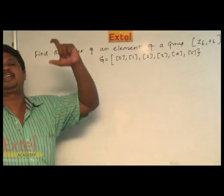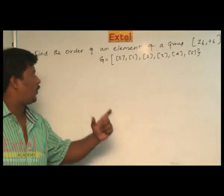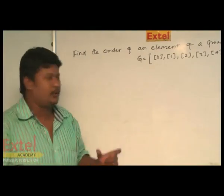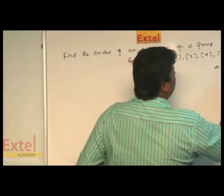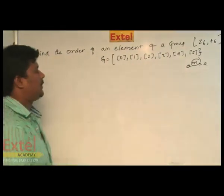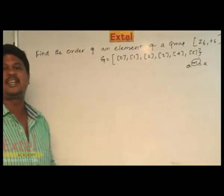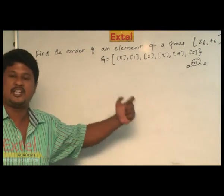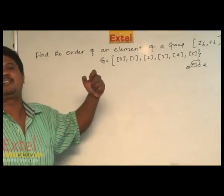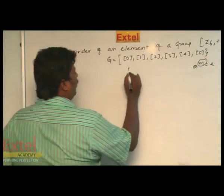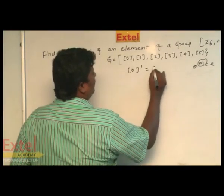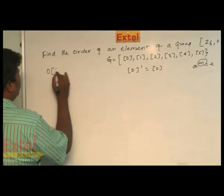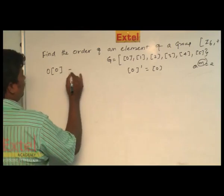For all 6 elements, we are going to find the order of each element: order of 0, order of 1, order of 2, order of 3, and order of 4. As I told you, if a power m equals E, then m is said to be the order of element a. E is the identity element under addition modulo 6. For element 0: 0 power 1 equals 0, therefore order of 0 is equal to 1.